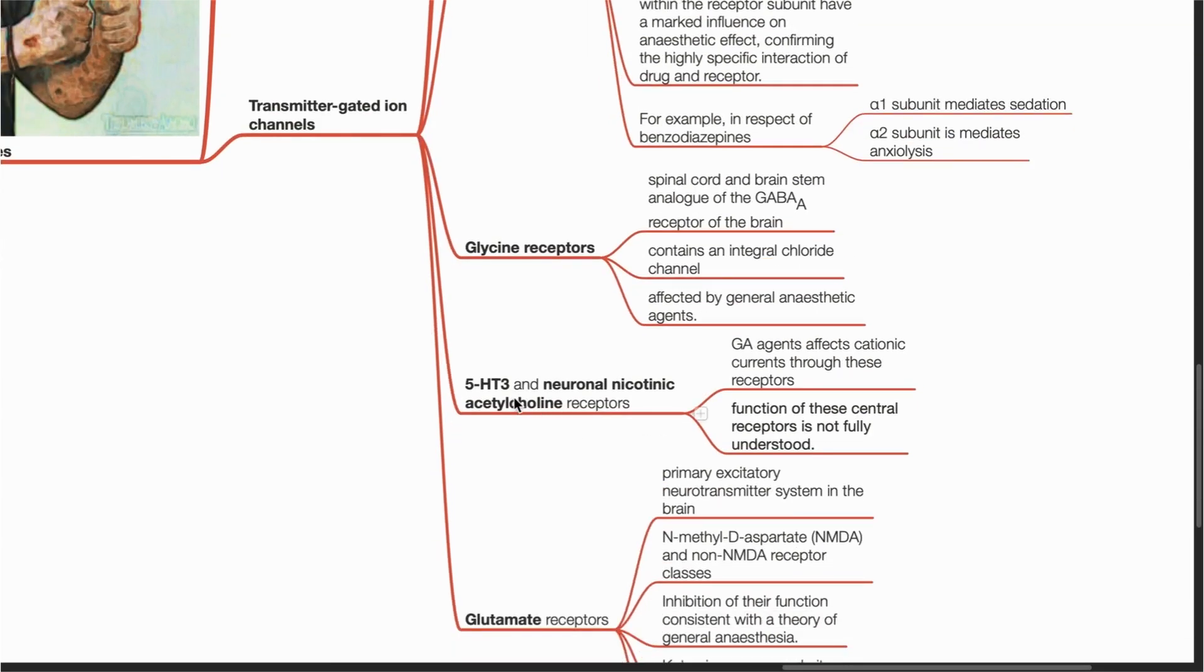Serotonin and neuronal nicotinic acetylcholine receptors are affected by GA agents. GA agents affect cationic currents through these receptors. However, the functions of these central receptors are not fully understood.